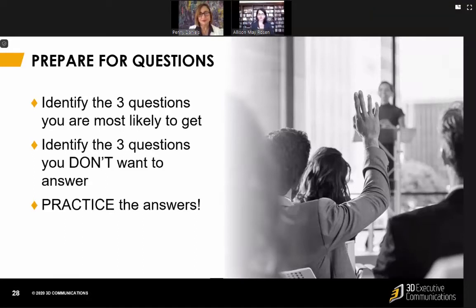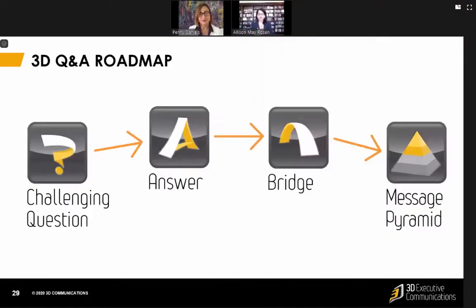Let me give you a model of what that can look like. We call it the 3D Q&A Roadmap. It's a pretty simple process — at least on paper. You've got to practice. It's a pretty simple process to get from a challenging question over to your message.